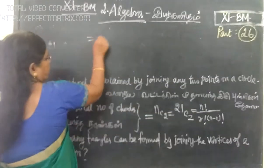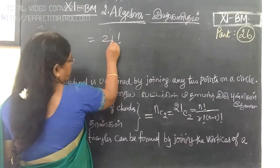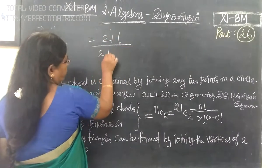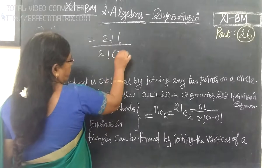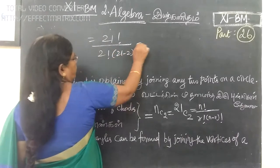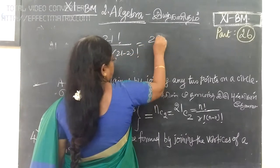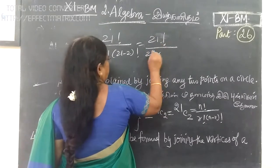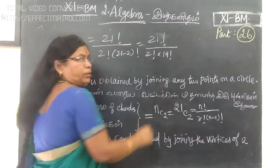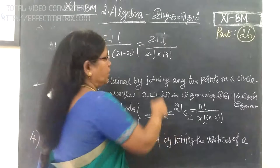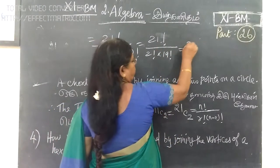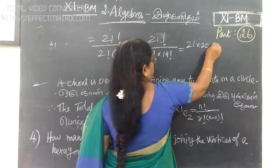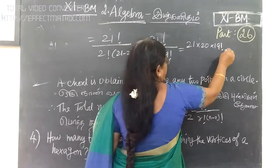That is equal to 21 factorial divided by R factorial, then 21 minus 2 factorial. So 21 factorial divided by 2 factorial times 19 factorial. Now, 21 into 20 into 19...